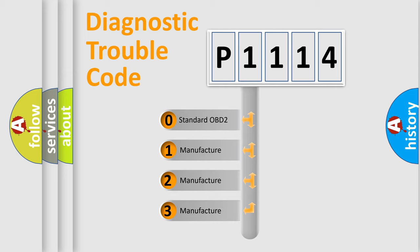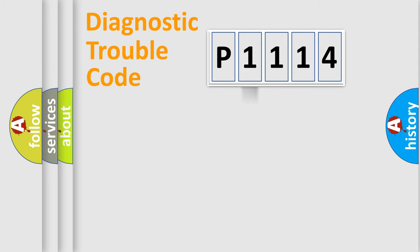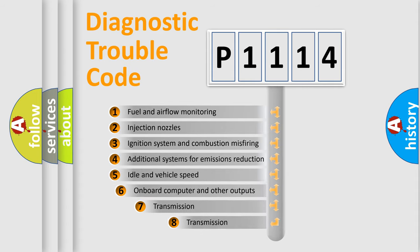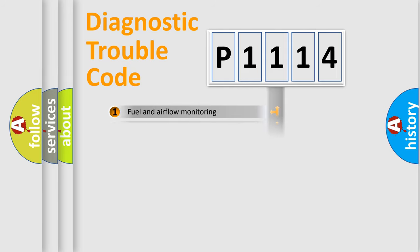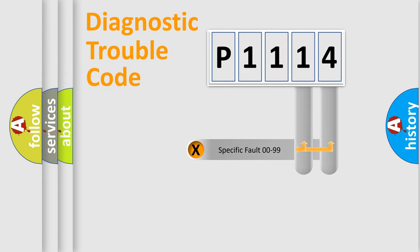If the second character is expressed as zero, it is a standardized error. In the case of numbers 1, 2, 3, it is a car-specific error. The third character specifies a subset of errors. The distribution shown is valid only for the standardized DTC code. Only the last two characters define the specific fault of the group.